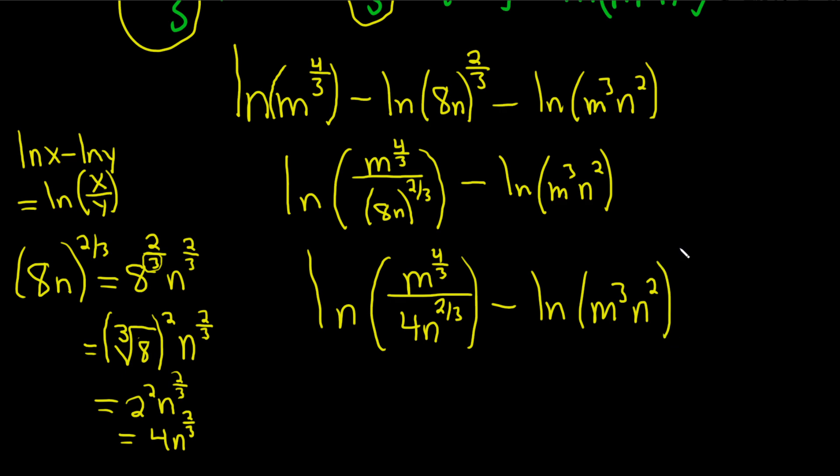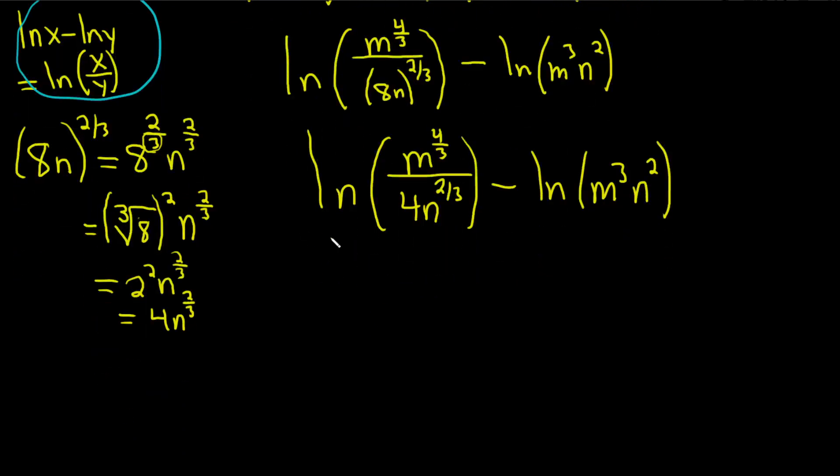All right, now we can use our super powerful quotient rule again, which is this one. So it's just going to be the natural log of this top piece, which is one thing in parentheses. So m to the four-thirds over 4n to the two-thirds. And that's in parentheses. And that's divided by all of this. So m cubed n squared parentheses.